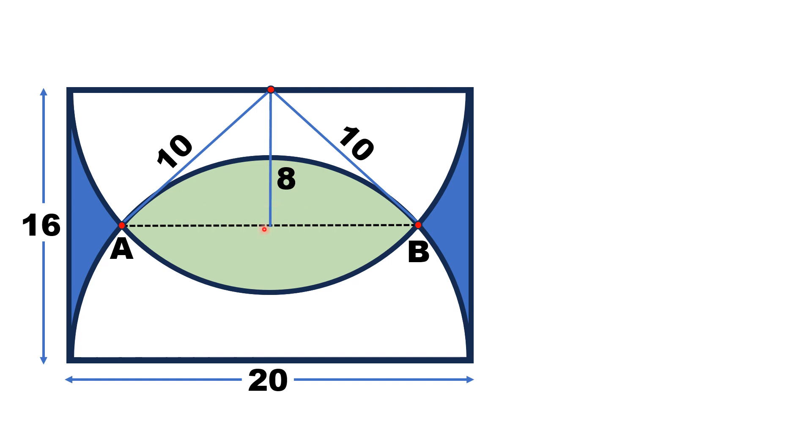Now let's call this length, which is half of AB, let's say this is X. And from here, this is a right triangle. Considering this right triangle and applying the famous Pythagorean theorem,